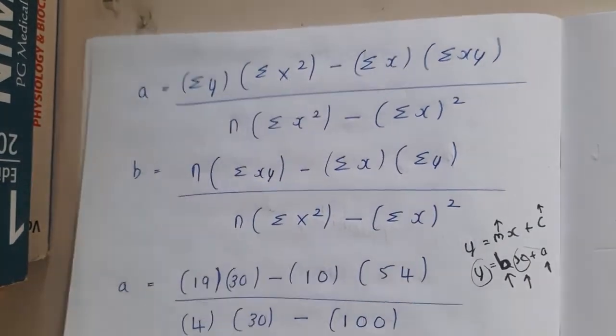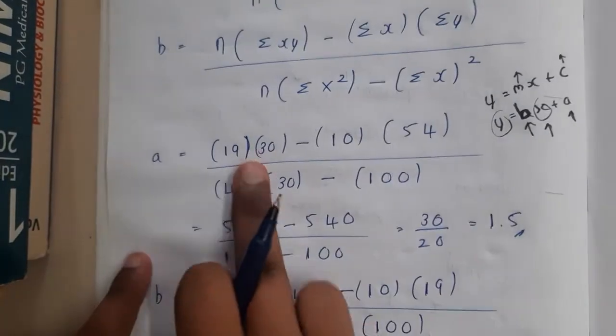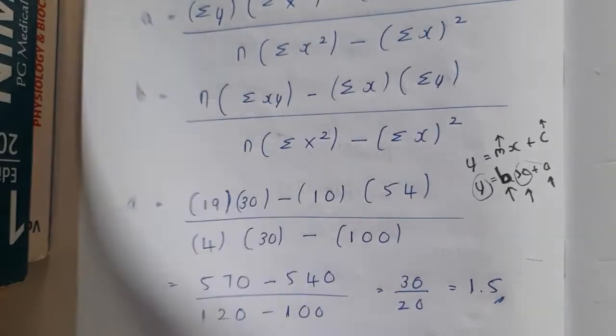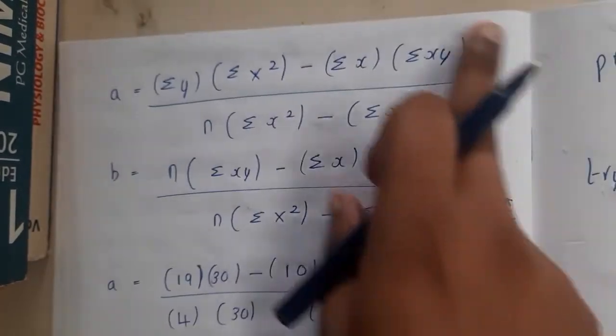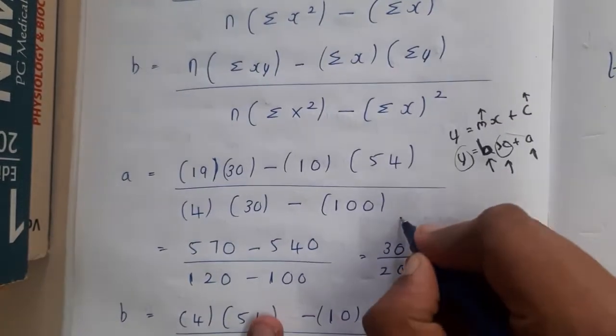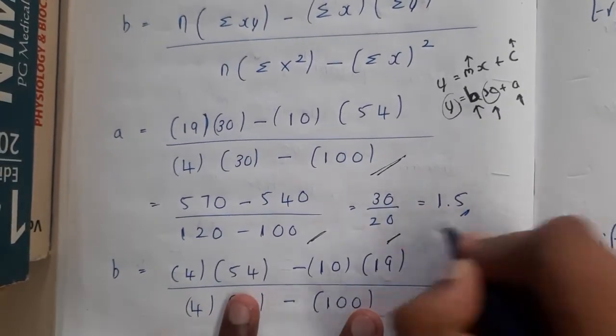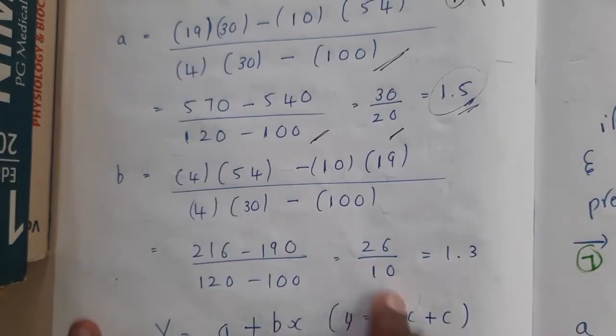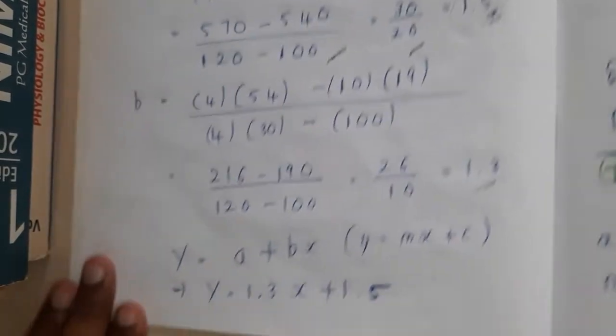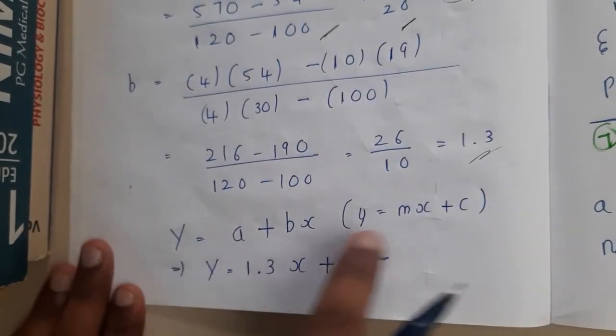Remember the formula somehow and now start filling the table. Sigma y is nothing but the total amount of y, so what is total amount of y? It is 19. So it is 19. The next is x square. We calculated all these values - x square summation is 30. In this way, just by observing the table you will be getting all the values. Once you substitute them you will be getting a value in this way. If you continuously solve it, you will be getting a as 1.5. Similarly if you solve b also you will be getting 1.3.